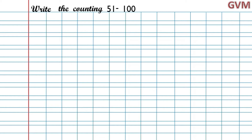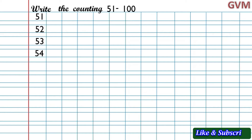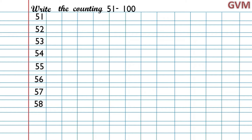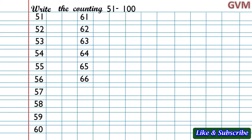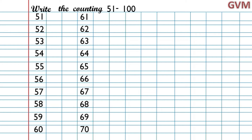Now we will start counting 51 to 100. Start from here after the margin line: 51, then leave one box, 52. Next numbers are 53, 54, 55, 56, 57, 58, 59, 60. This is our first row. We need to start from the next row. After leaving two boxes: 61, then leave one box, 62, 63, 64, 65, 66, 67, 68, 69, 70.